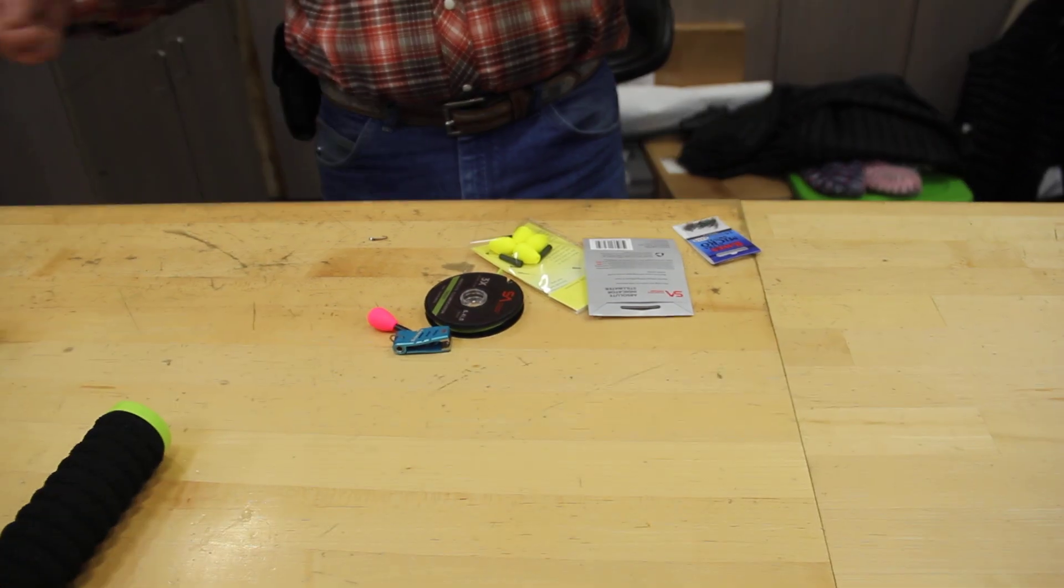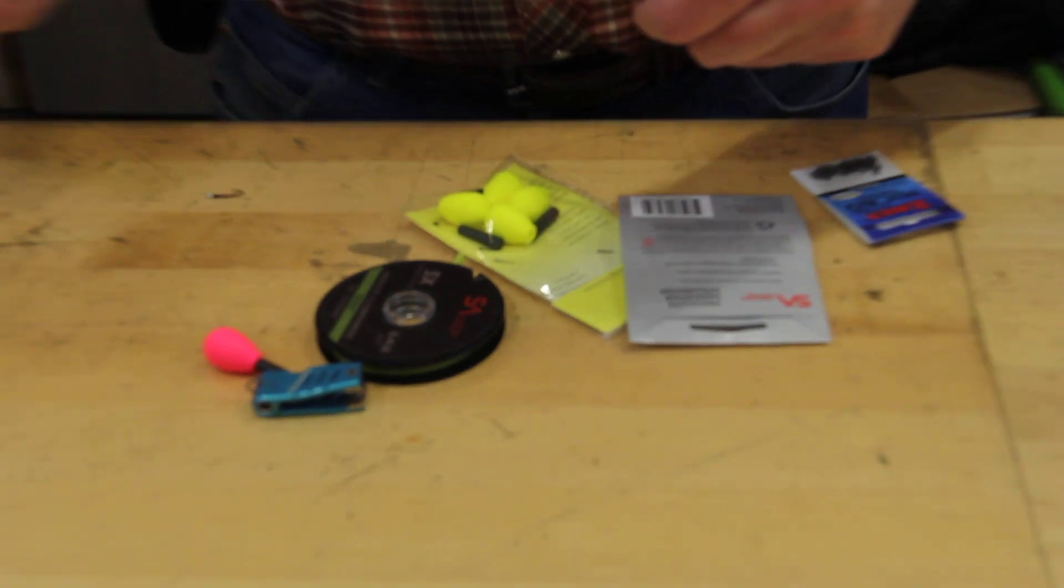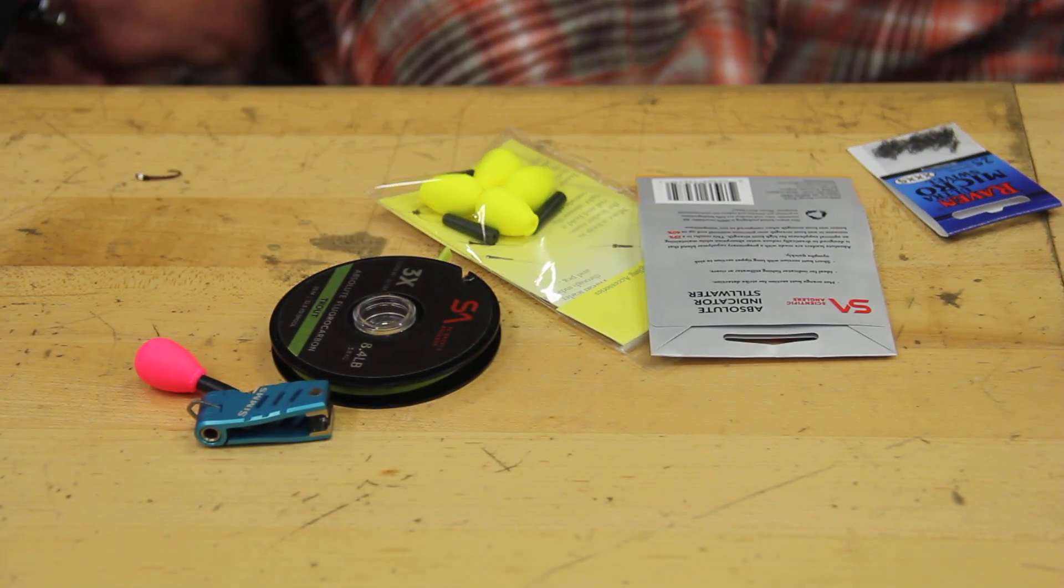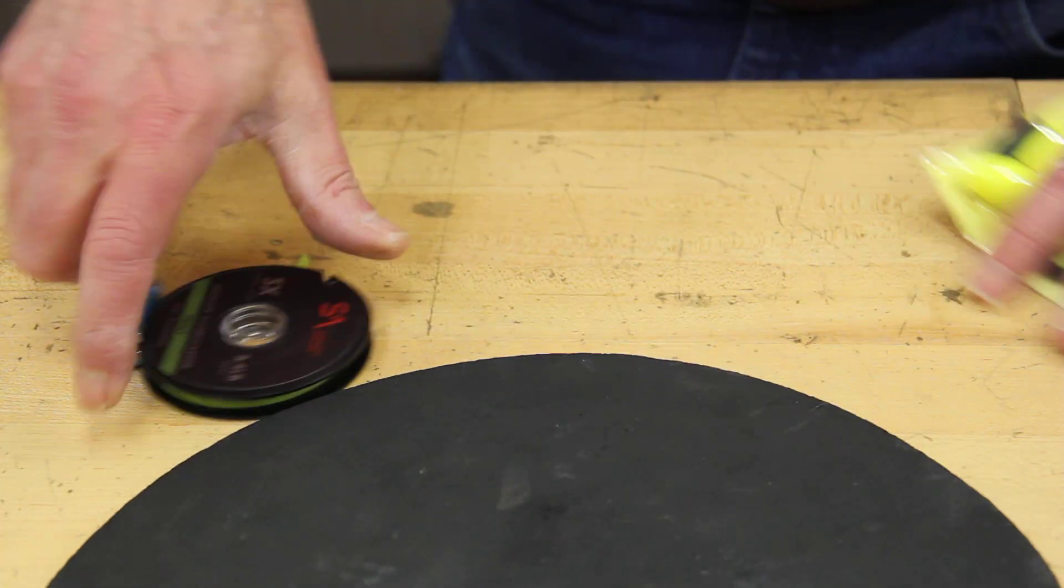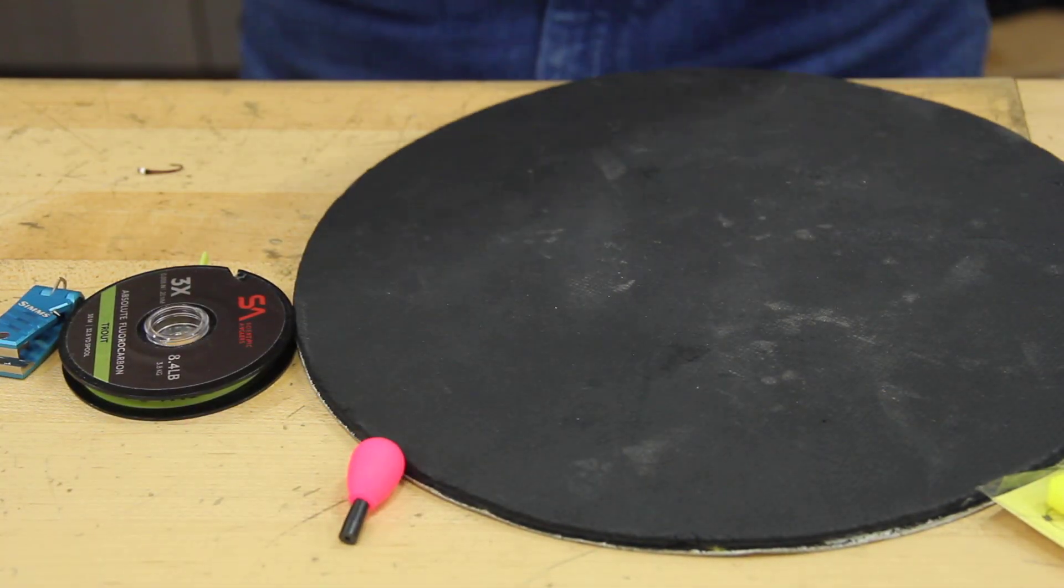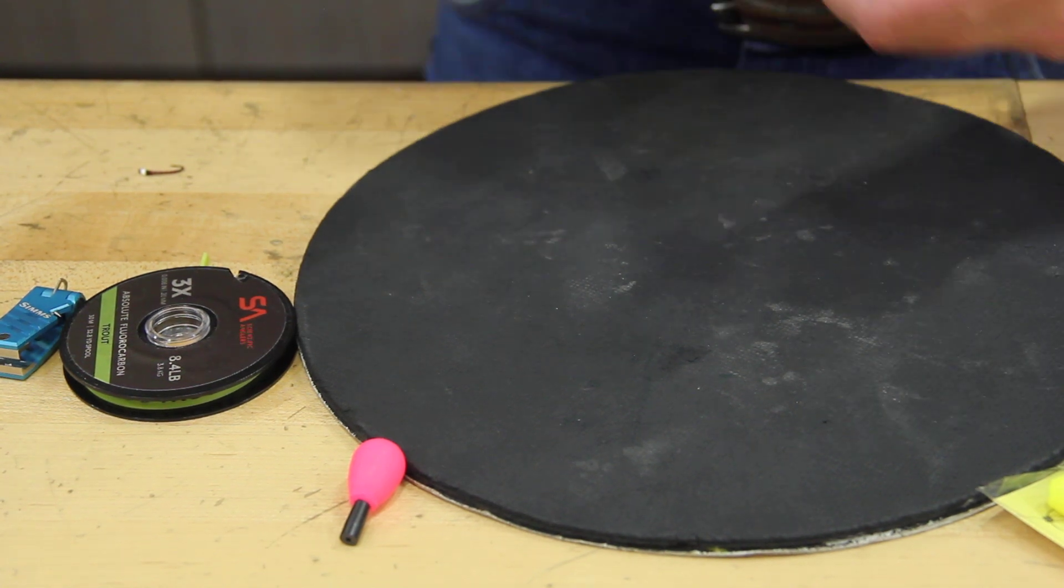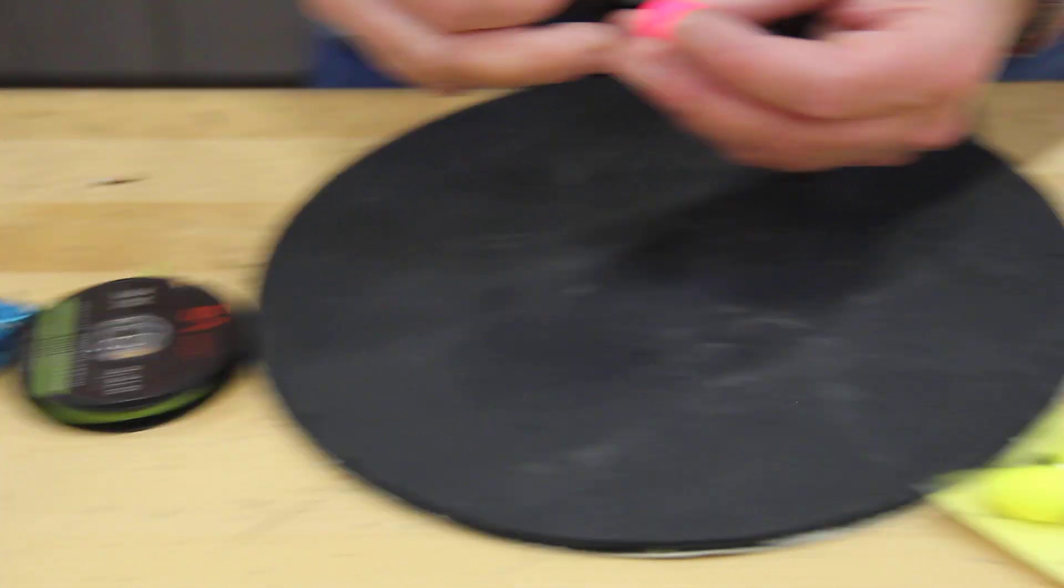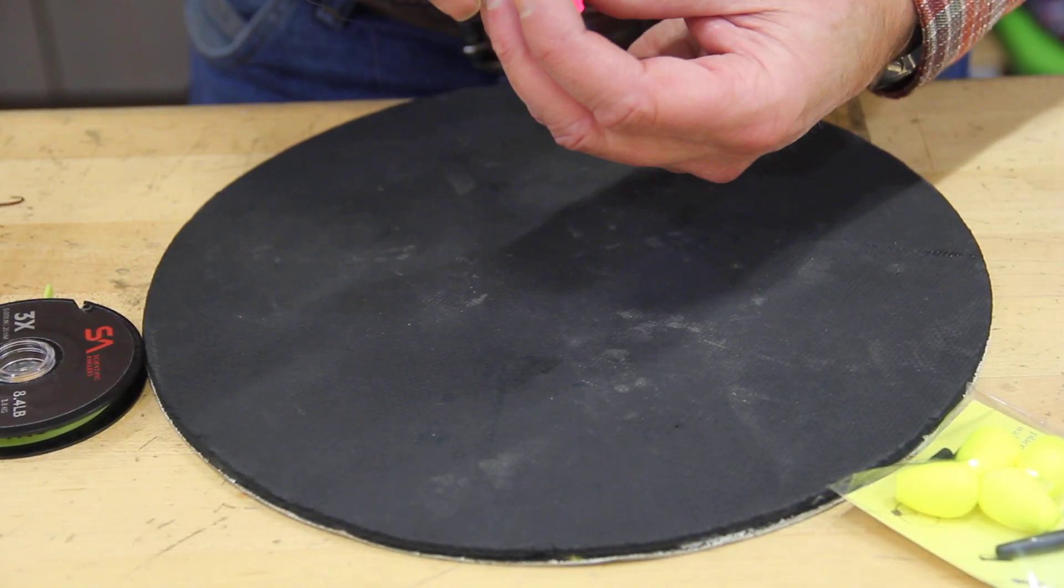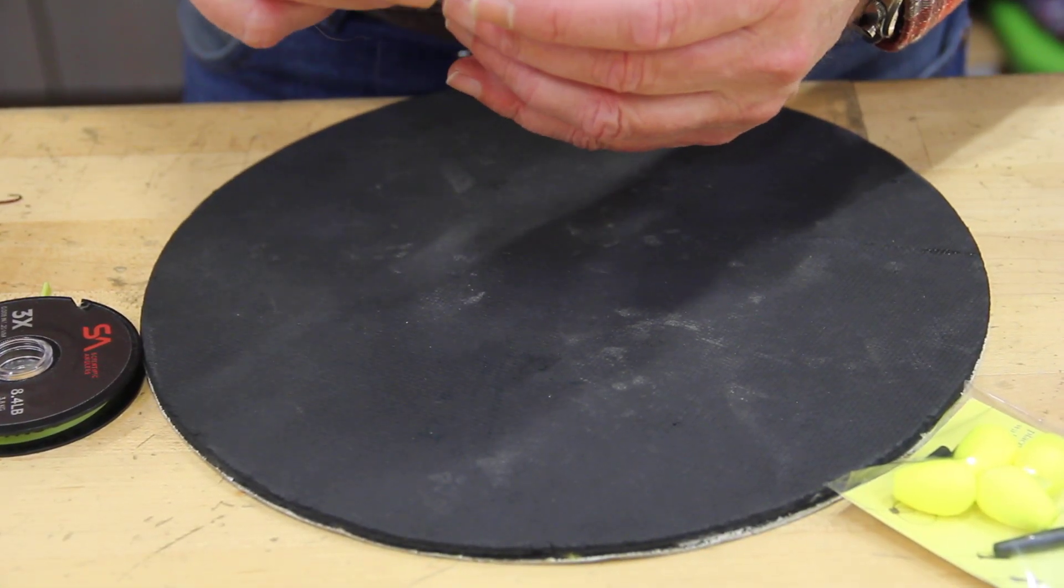Okay, so the next thing is, we're going to zoom down now. So, we're going to take the end of our leader, and we're going to slide our leader through it, through our indicator.